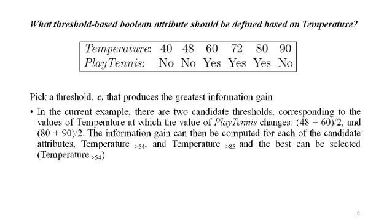As an example, suppose we wish to include the continuous valued attribute temperature in describing the training example days in the play tennis learning task. Suppose the training examples associated with a particular node in the decision tree have specific values for temperature and the target attribute play tennis. The question is: what threshold-based boolean attribute should be defined based on temperature?